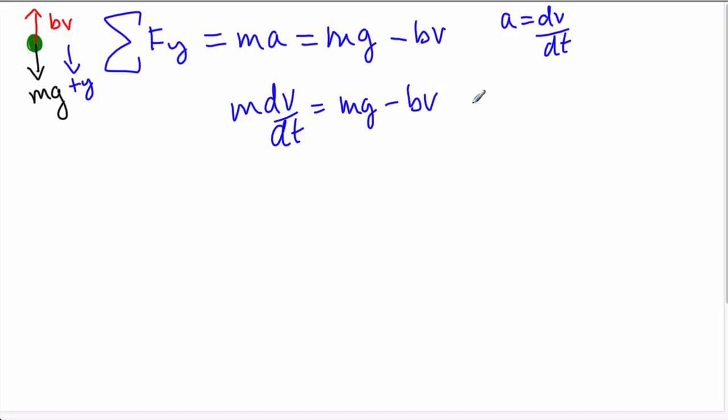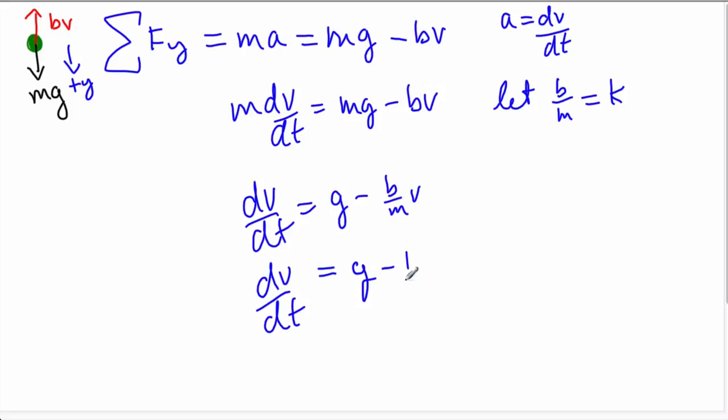The trick now is to separate the variables. This is going to be a differential equation. Our goal is to get everything related to velocity on one side and everything related to time on the other. I'm going to use a relationship b over m equals some new constant k, which will allow me to rearrange this. So now I've got dv/dt equals g minus k times v.